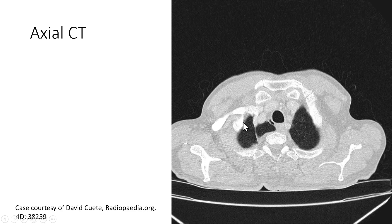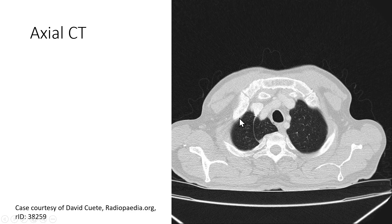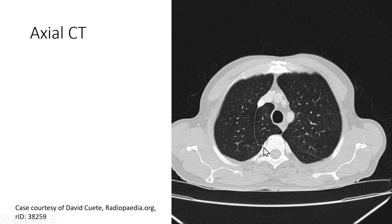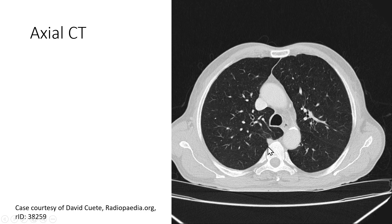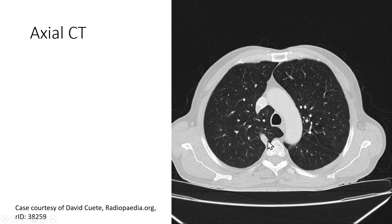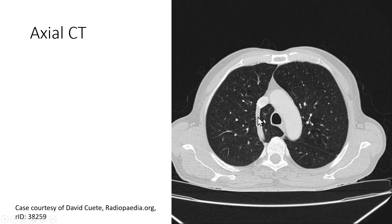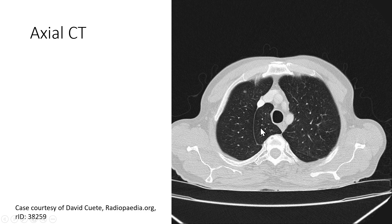In axial CT, let us look at how this azygos lobe presents. This is the right lung and this is the left lung. The azygos lobe is always present on the right side because the azygos vein is on the right side. Going downwards you can see the azygos vein entering the superior vena cava by arching anteriorly, and you can see how the medial aspect of the lung is present. This is the azygos lobe, and running upwards you can see the thin mesoazygos separating the medially running azygos lobe from the rest of the upper lobe.